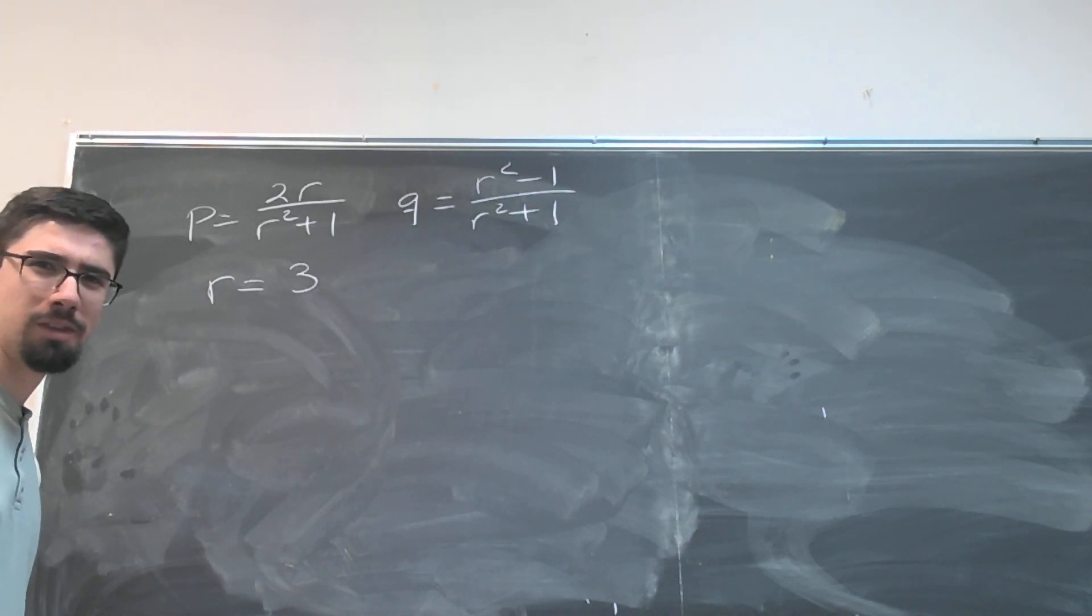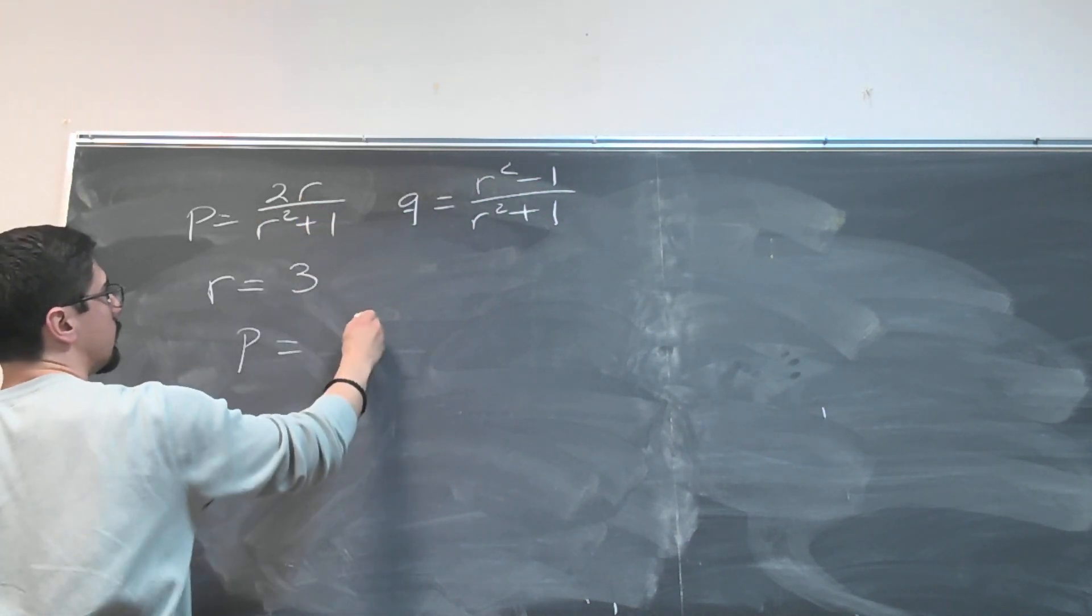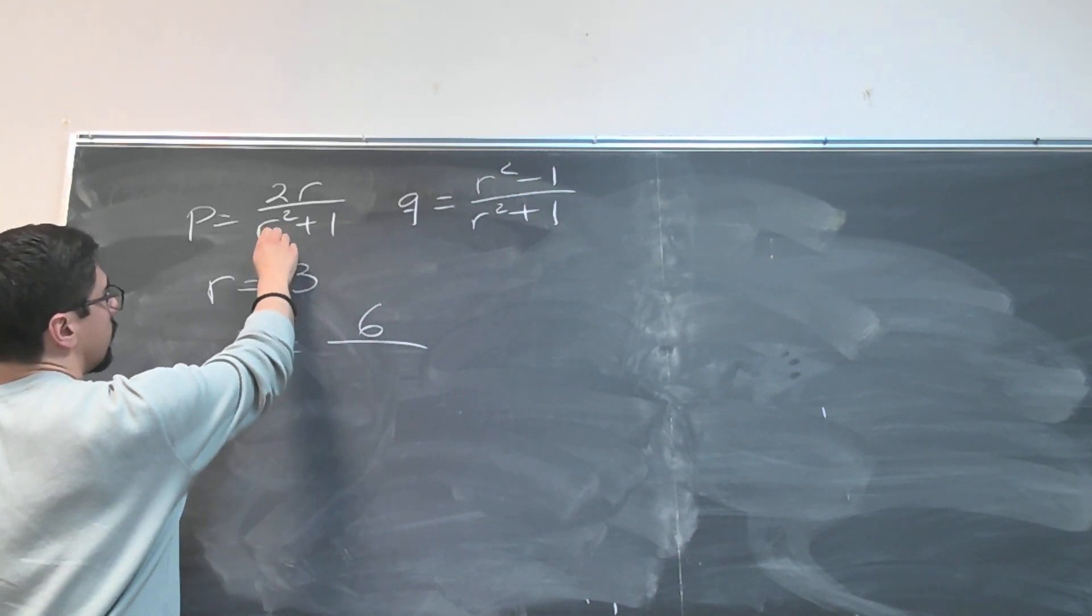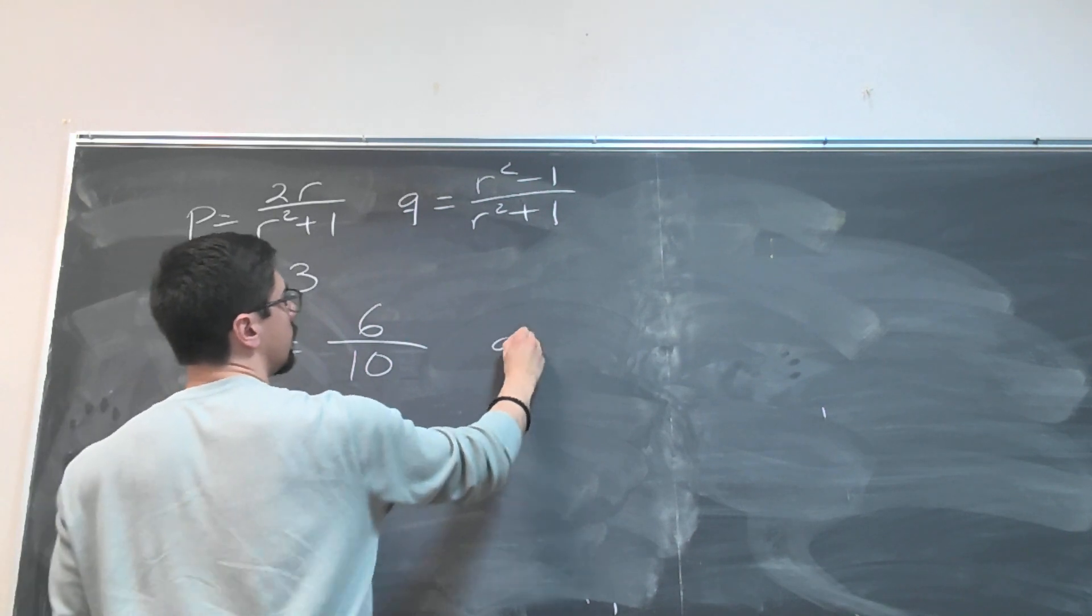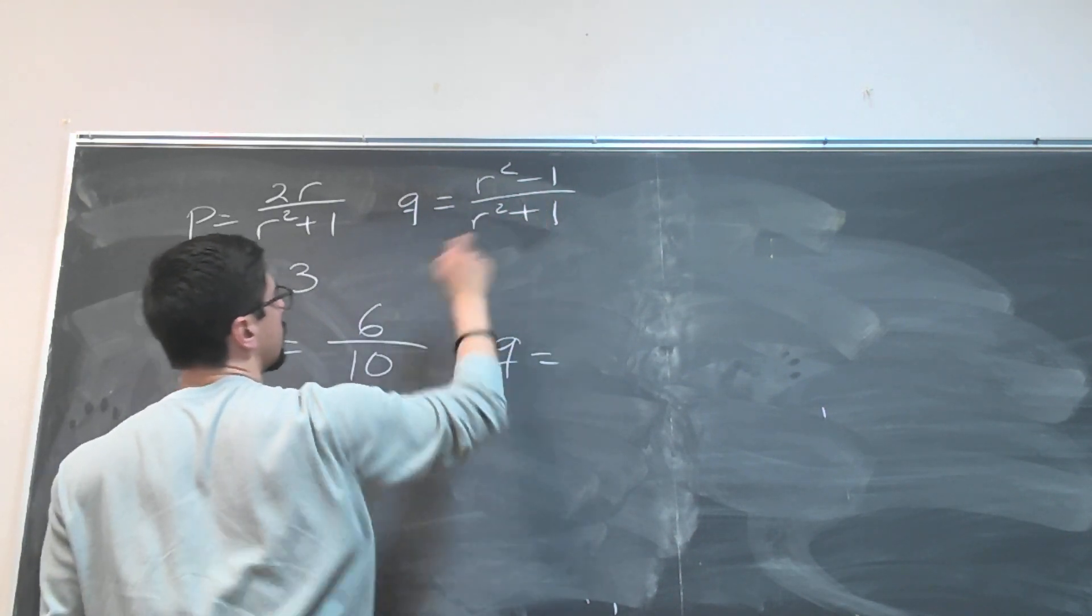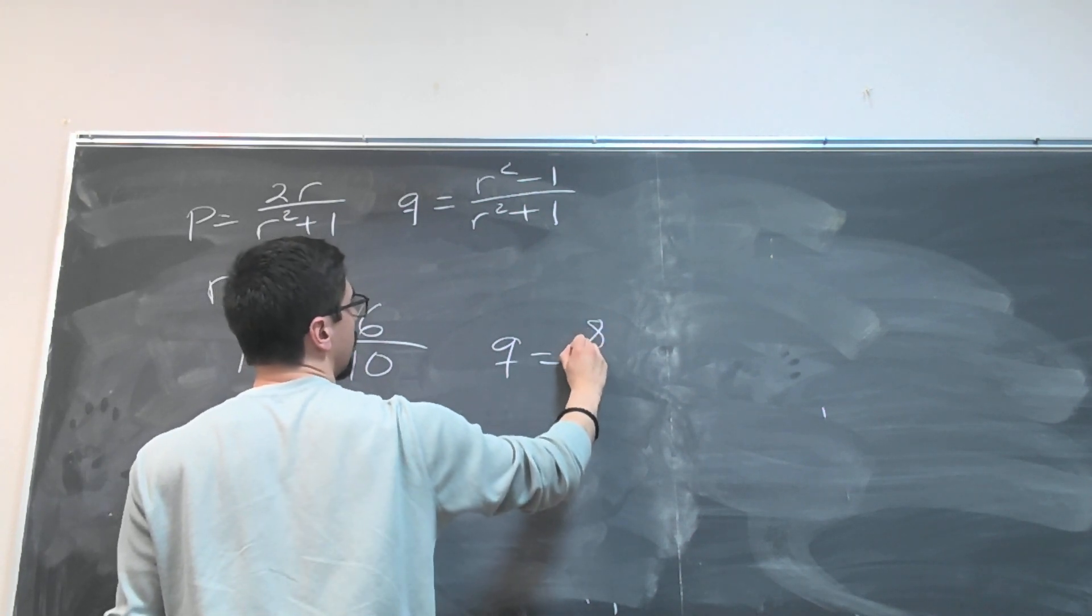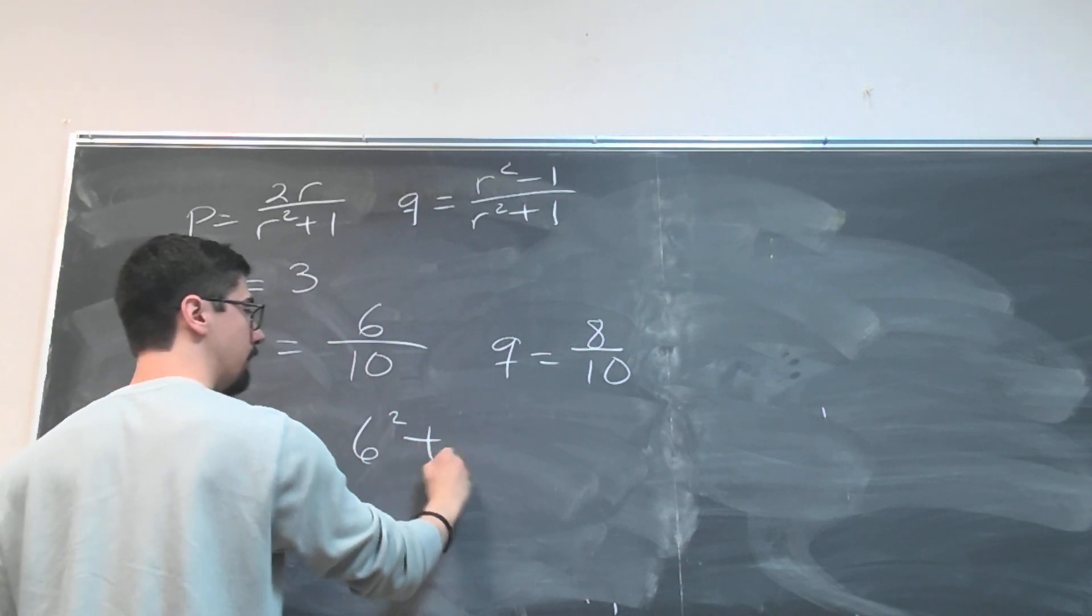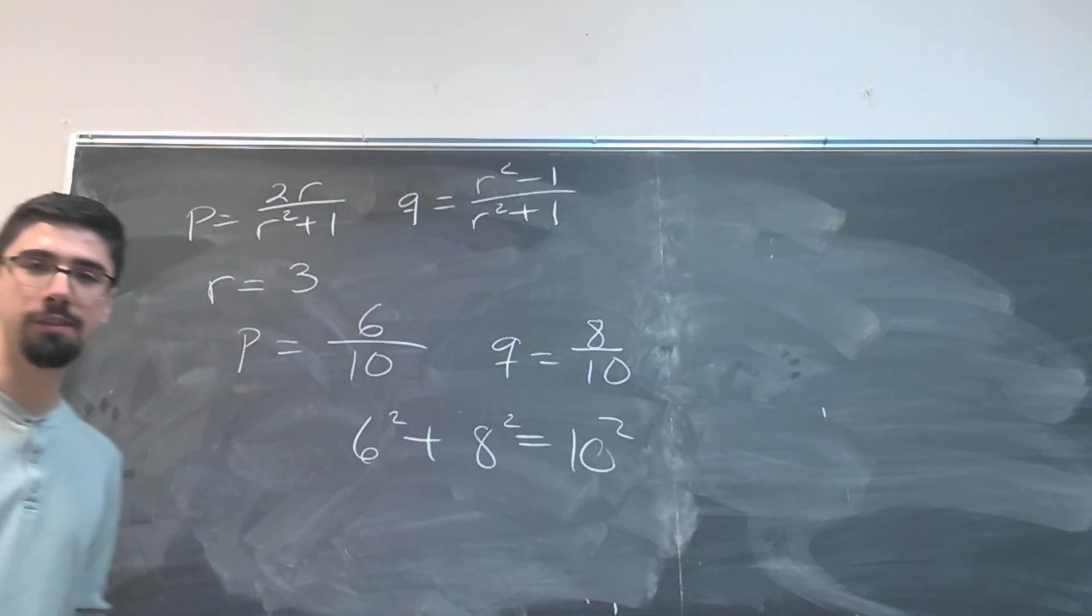So we do that, we get that p is going to equal 2 times 3 which is 6, and then r² plus 1, that's 3² plus 1, that's 10. And then q is going to equal, let's see, that would be 8 over 10.